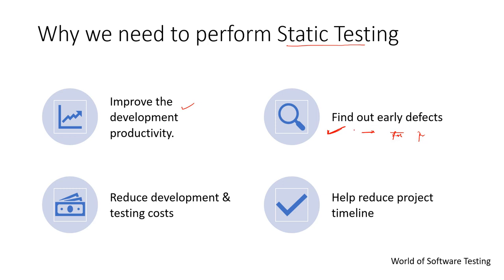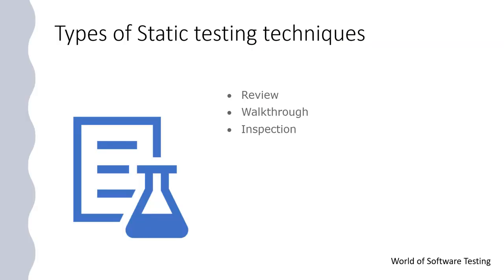It is better to find early defects so that the defect cost will be less. The next reason is to reduce development and testing cost — static testing will decrease the testing cost and development timescales. It also helps reduce the project timeline, because finding defects at a later stage hampers the project schedule. These are the key reasons we perform static testing.